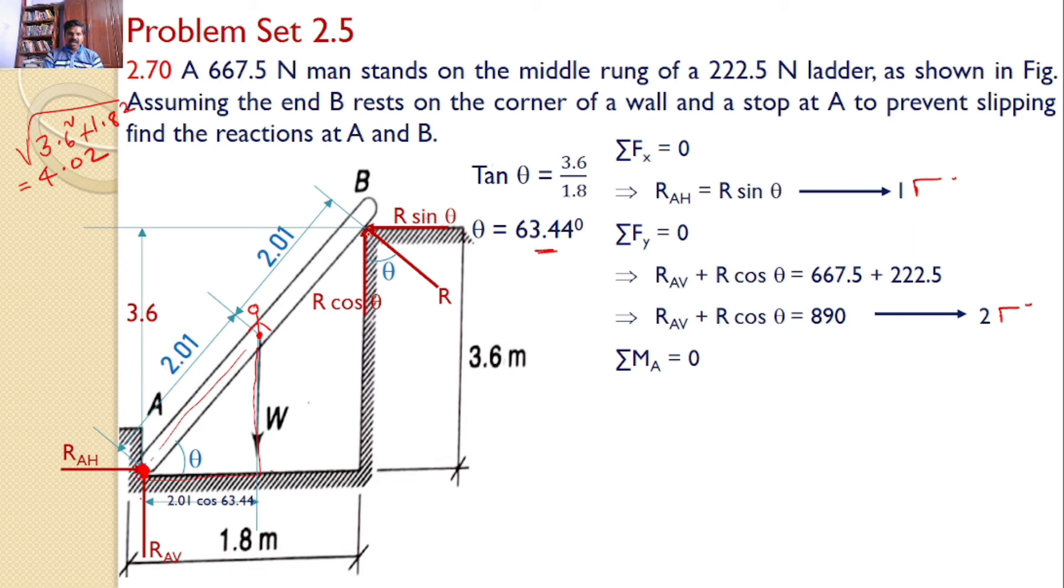For R cos theta, this is the line of action of R cos theta. From point A to the line of action of R cos theta, this distance equals 1.8. So you know all the distances.